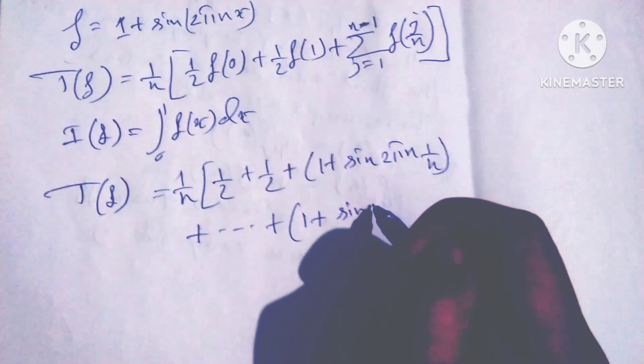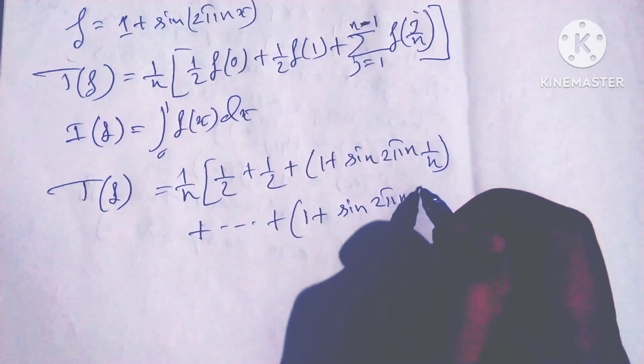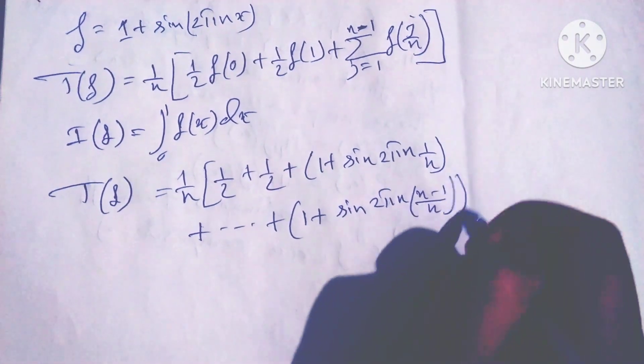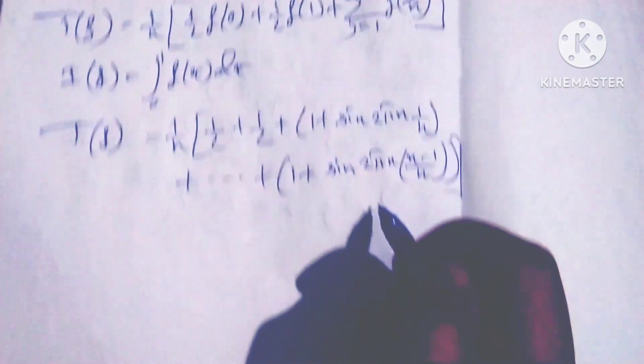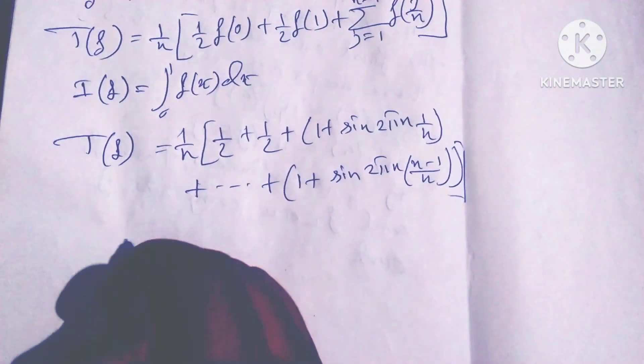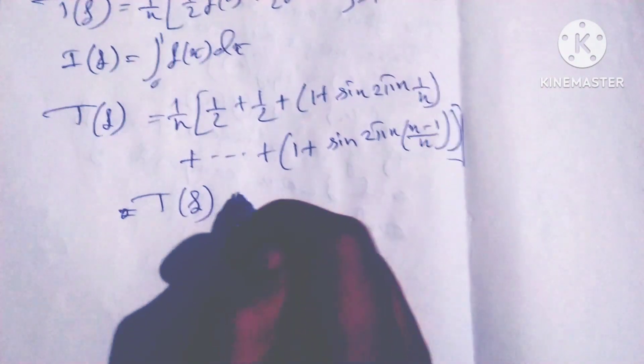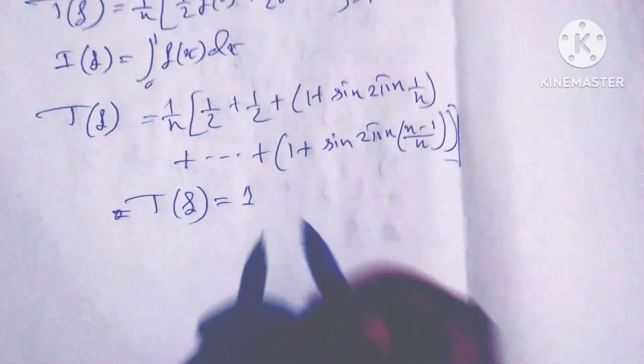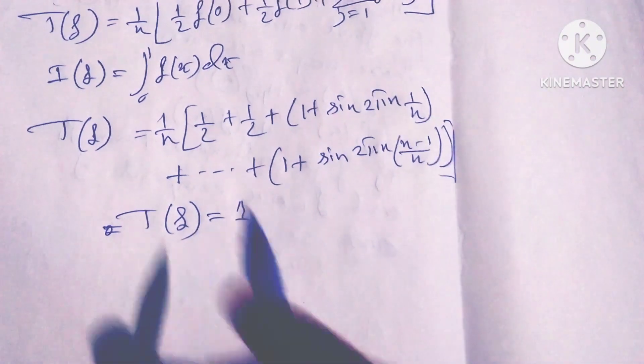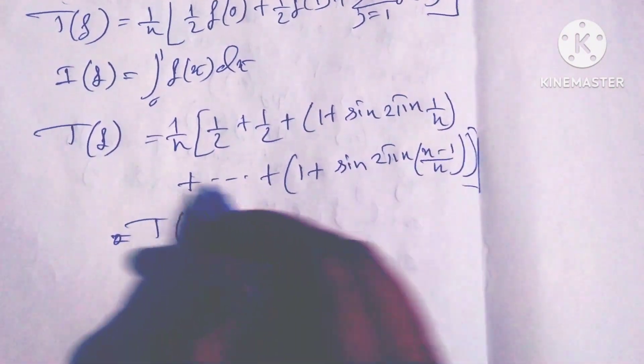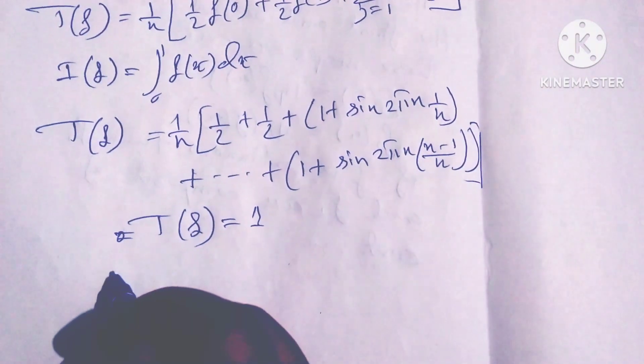So it is 1 by n plus up to 1 plus sine 2πn times (n-1) divided by n. Now we get the value: T(f) equals 1.